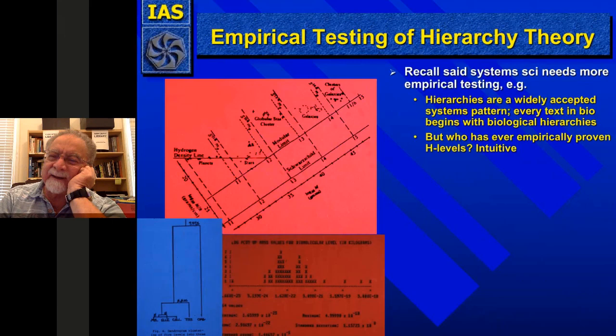I decided to remake general systems theory so that it used data. I asked the question: who has ever empirically proved hierarchical levels? Are they just intuitive? Are they made by humans?